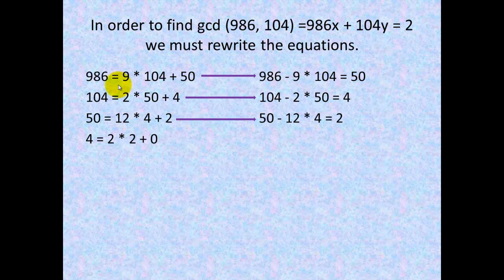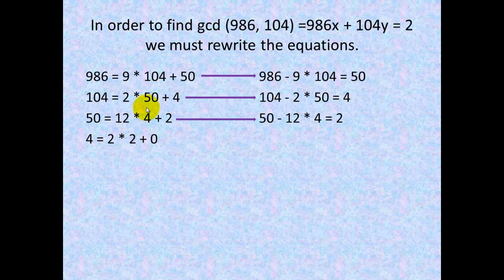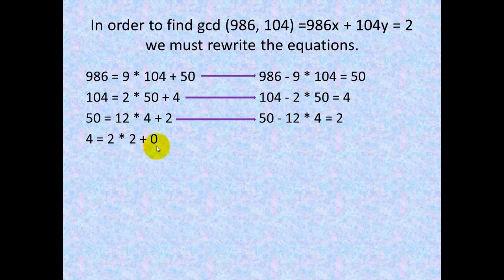When we rewrite these equations, we're simply setting everything equal to the remainders. We make this equation equal 50 by subtracting 9 times 104 from both sides, giving us 986 minus 9 times 104 equals 50. Then we subtract 2 times 50 from both sides to get 104 minus 2 times 50 equals 4. Then we subtract 12 times 4 from both sides, giving us 50 minus 12 times 4 equals 2. We can stop there since this already equals 2.